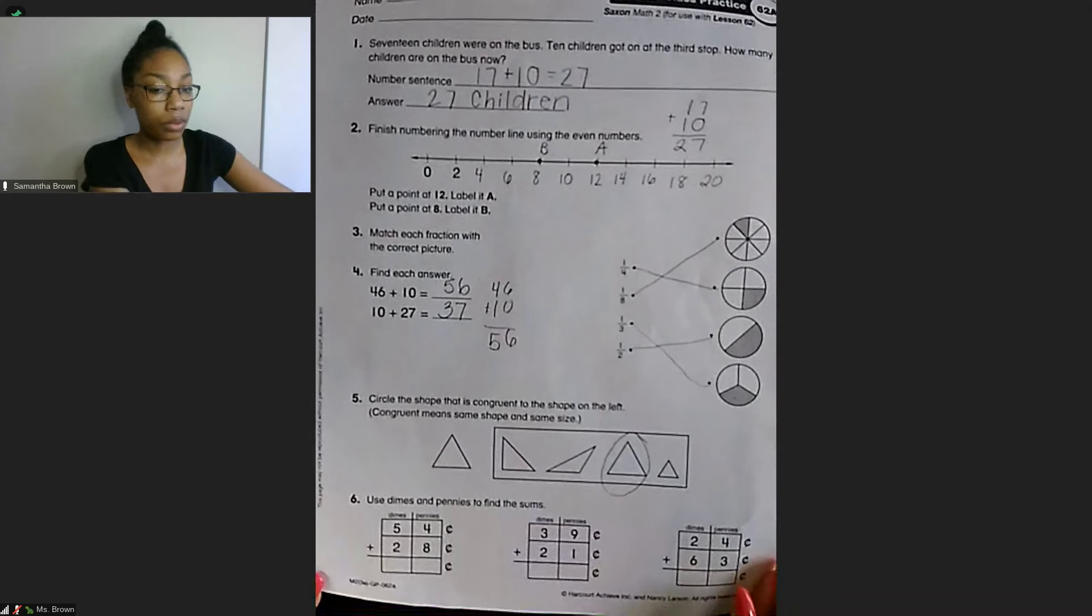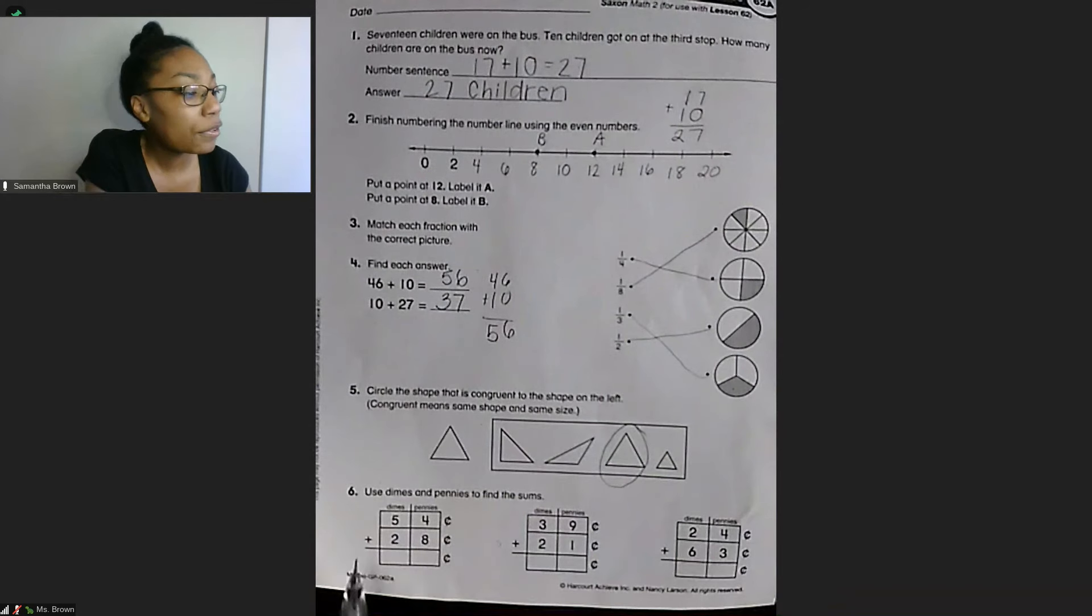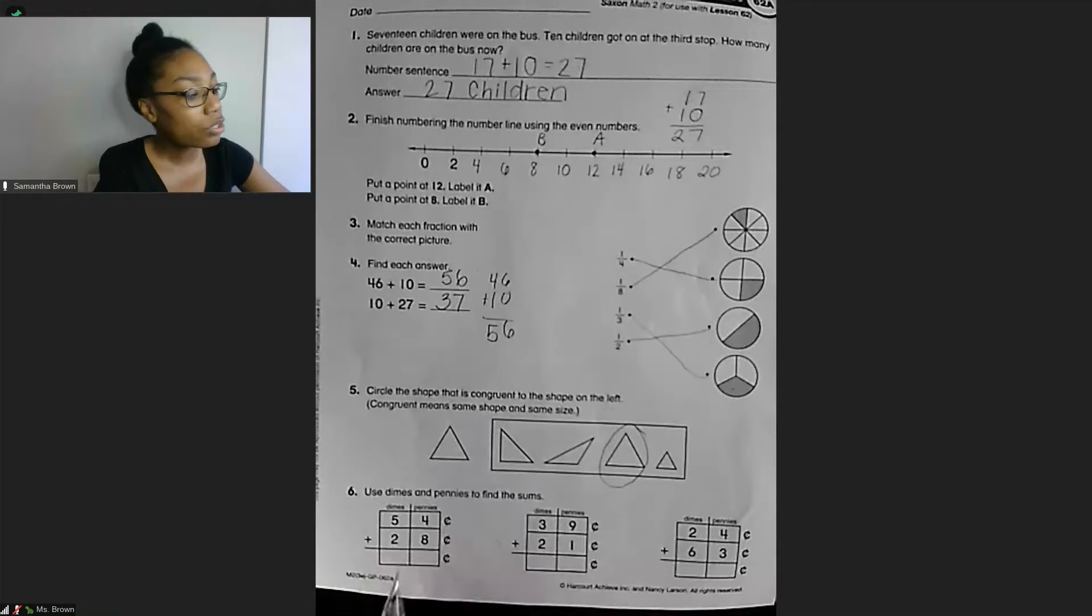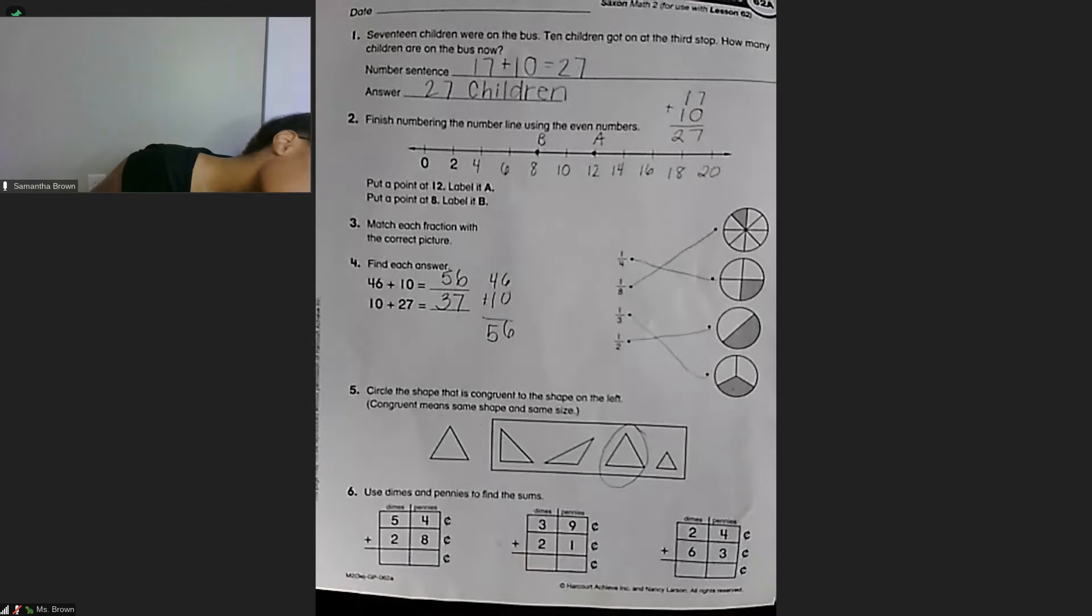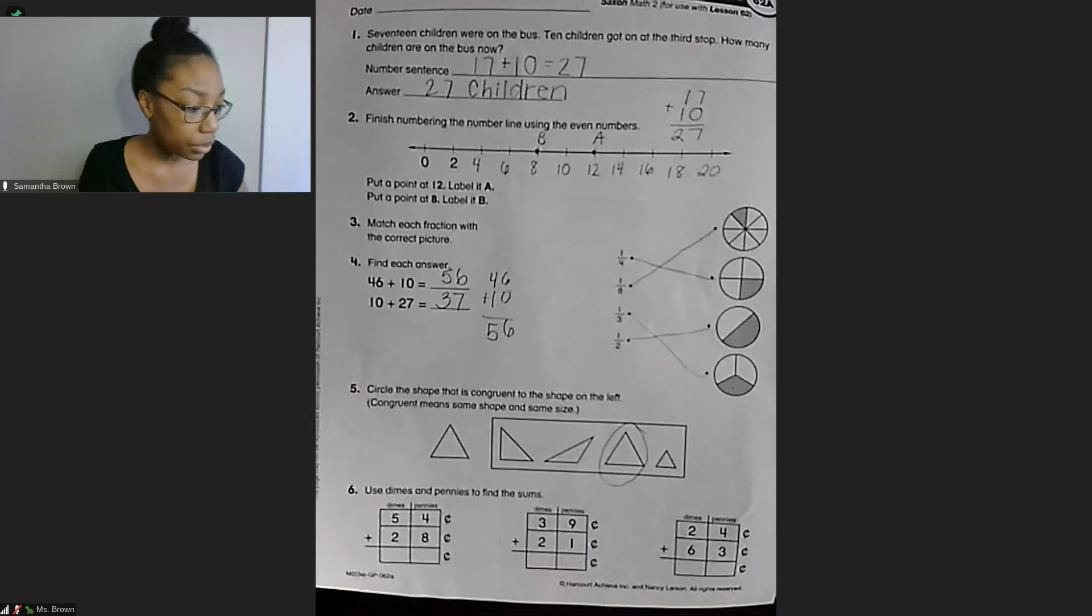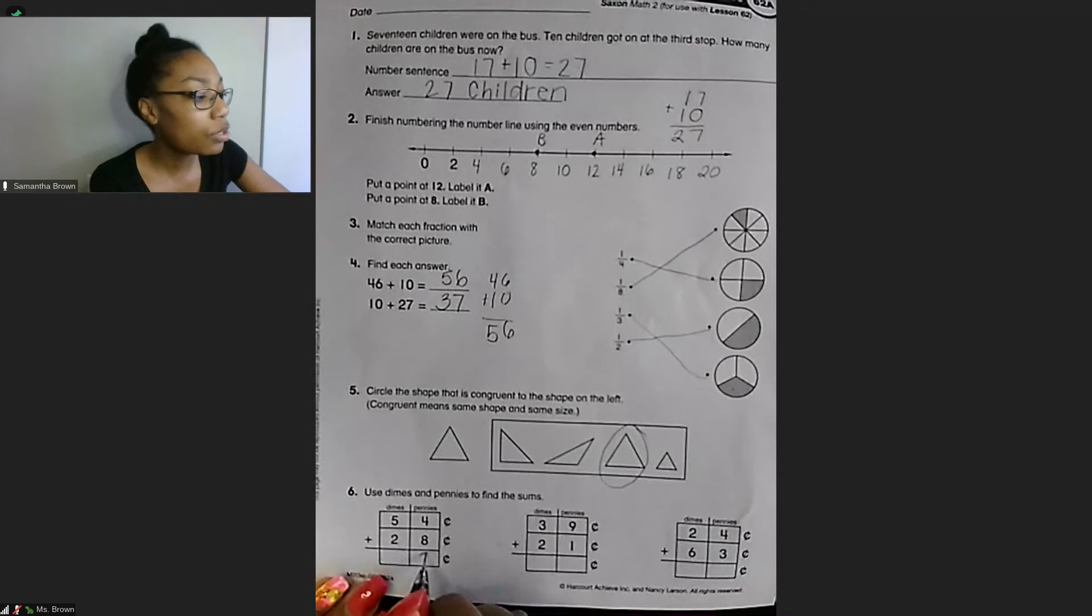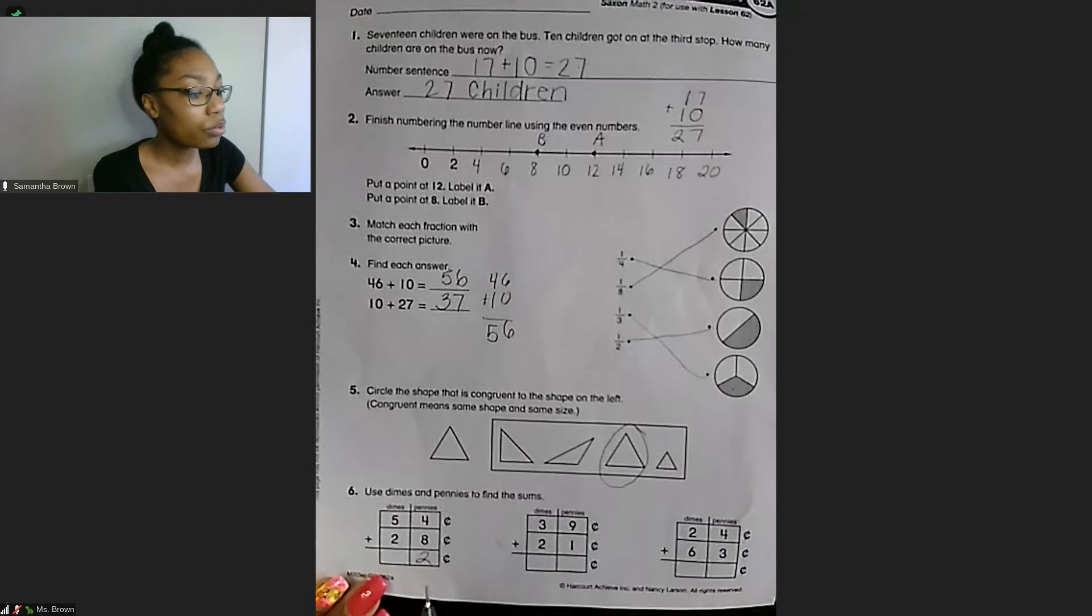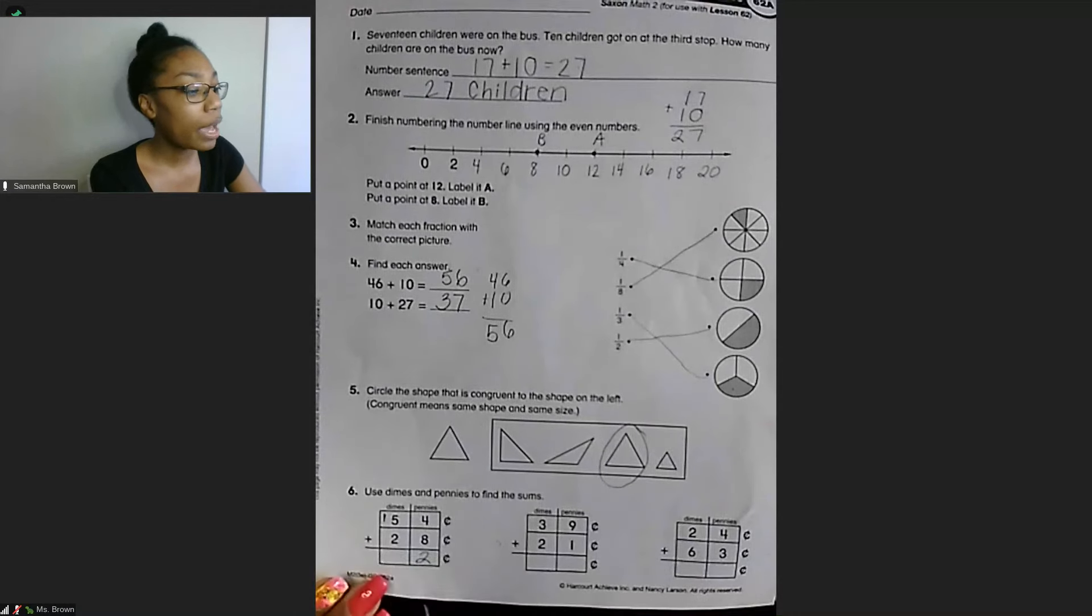So they throw a couple of no's in there to trick you. And then our last piece here is we have 54 cents plus 28 cents. So we are going to start with 4 plus 8. It's a little blurry. There we go. We have 4 plus 8. So I know that 4 plus 8 is 12. So I need to start with my 2 here. And then we are going to bring the 1 from our 12 over to the next column. So I'm going to just put it in the box. And we have 5 plus 2 equals 7. And then we need to add back in that 1. So 7 plus 1 equals 8. So our answer is 82 cents.